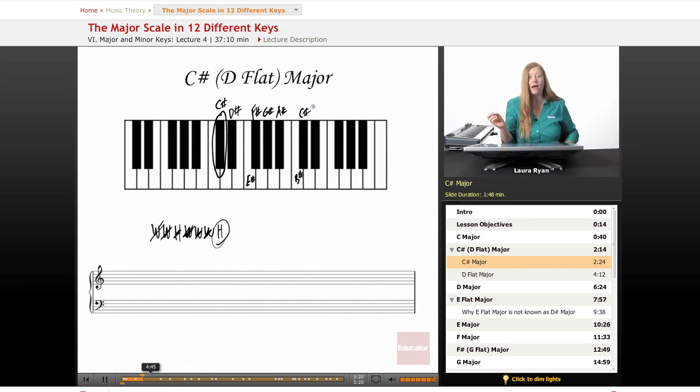Whole, whole, half, whole, whole, whole, half. Let's write it out starting with C sharp. C sharp to D sharp, we'll draw a sharp next to the D sharp. We're not going to do any key signatures for this lesson. We'll be really directly dealing with each note, so we'll just write an accidental, either a sharp or a flat, next to the note.